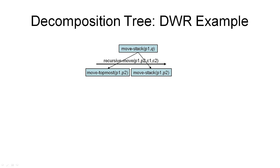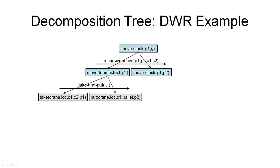The procedure then takes the first subtask in this new network, which is the move-topmost task. Because this is a non-primitive task, we end up in the third part of the algorithm again and choose a method — here I'm choosing the take-and-put method with appropriate arguments — to refine this task, giving two new subtasks. These are shown in gray because they are now primitive subtasks. The procedure goes through the recursive call, taking the first subtask, which is the take-crane-at-location subtask, and finds an action that matches this task.